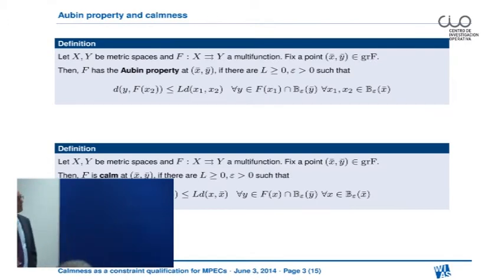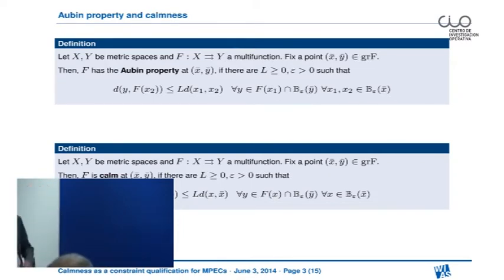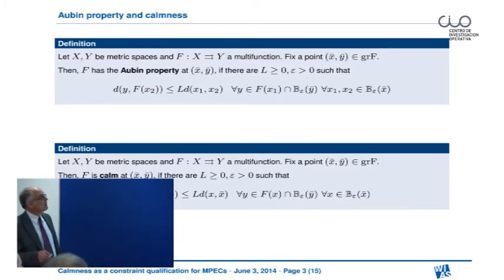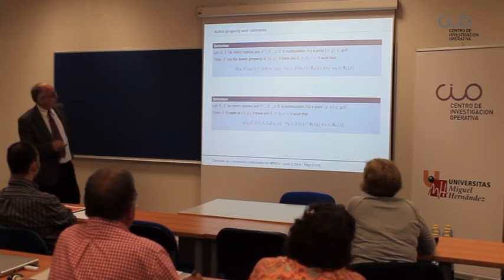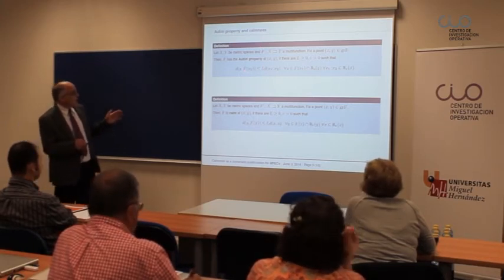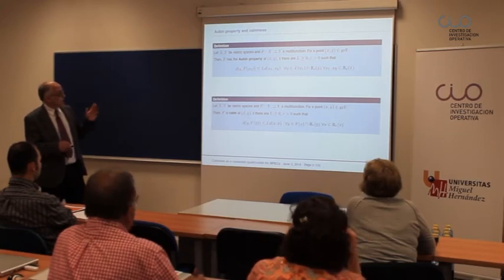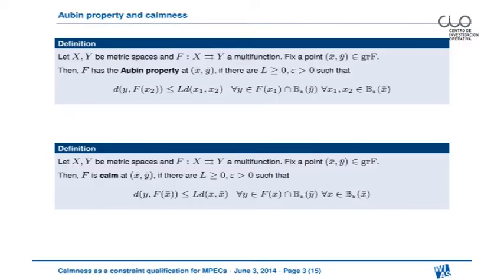The second group of concepts I have to introduce are certain Lipschitz properties. The first one is the so-called Aubin property of a multifunction between metric spaces. The formal definition is given here: we fix a point (x-bar, y-bar) of the graph, and this multifunction is said to satisfy the Aubin property whenever we can estimate the excess of one of the images over another image of the multifunction for arguments x1, x2 close to the fixed x-bar in a Lipschitzian way.